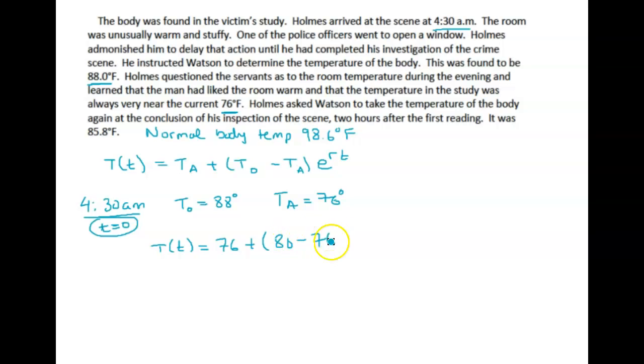We're gonna have the temperature with respect to time is the ambient temperature plus initial minus the ambient e to the rt. So the temperature is 76 plus 88 minus 76 is 12 e to the rt. This gives us our starting equation.